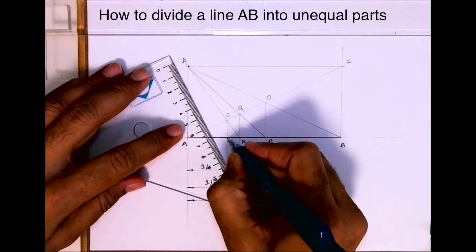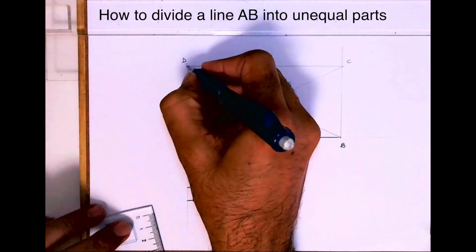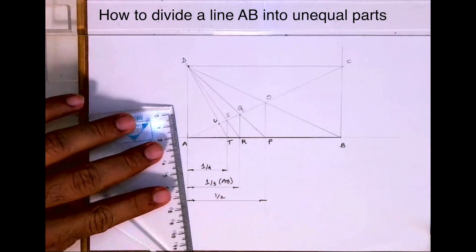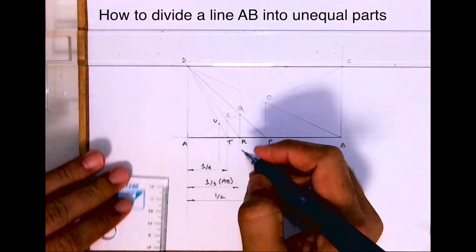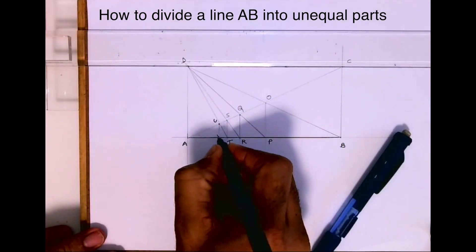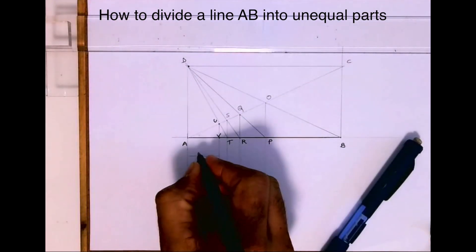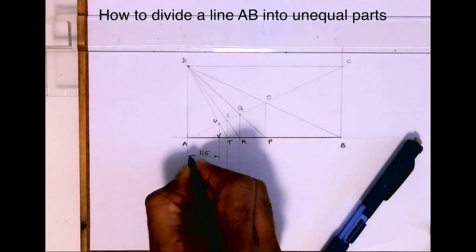Then join D to T. Wherever it will cut, that will be point U. And this is V, so AV is one fifth of AB. So this way we can keep on doing it.